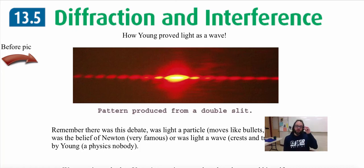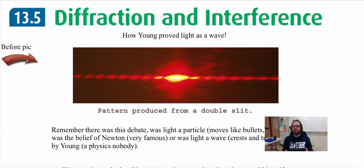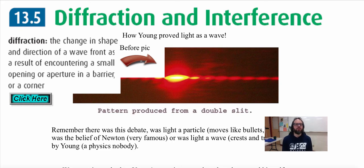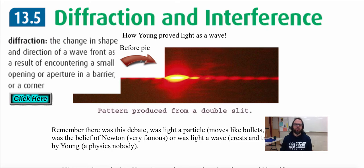In this video and the next few videos we are going to be looking at diffraction and interference. This is very important to explain how Young proved that light, or EMR, is a wave, as we learned earlier. Before we get into that, we have to know what diffraction is. Diffraction is the change in shape and direction of a wavefront as a result of encountering a small opening or aperture in a barrier or corner.